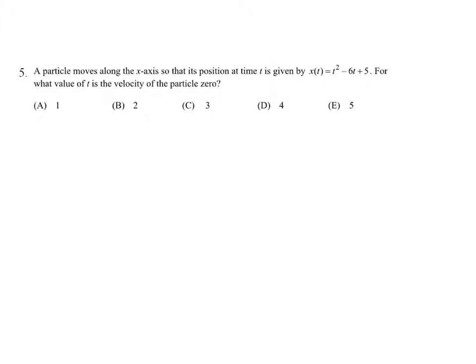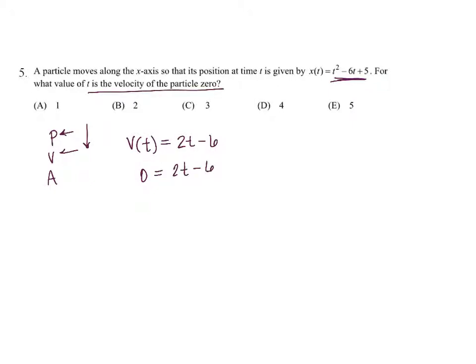This next problem is a PVA problem. We're given position and asked about velocity, so we move down the chain by taking the derivative. The velocity function is the derivative of the given position, which is 2t minus 6. Setting that equal to 0 and solving gives us the time t equals 3 when the velocity of the particle is 0.